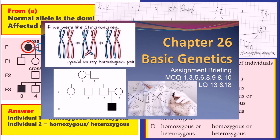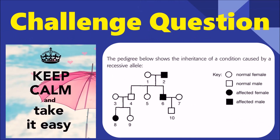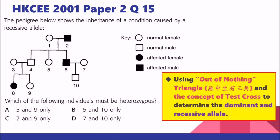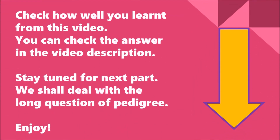For the full version of this question, you can check the assignment video of chapter 26. Now it's time to check if you are equipped with the skills of finding the out of nothing triangle. This pedigree shows the inheritance of a condition caused by a recessive allele. Find the out of nothing triangle first, then deduce that the parents in it are heterozygous. Also try applying the concept of test cross to help determine which individuals must be heterozygous. Check your answer in the description and comment section. Next part, I shall teach you all the steps of answering long questions in basic genetics. Enjoy, see you next time, bye-bye.